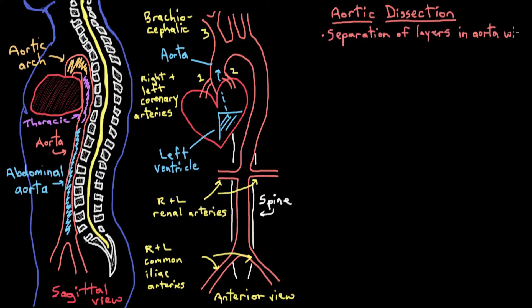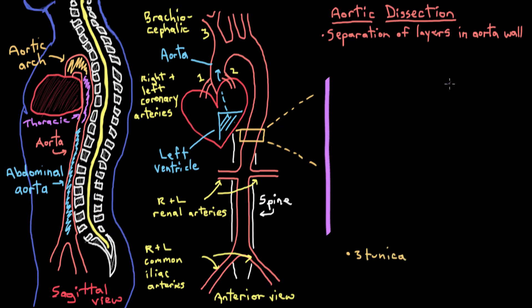To really understand what an aortic dissection is, let's look at the anatomy of its walls to see how this separation might happen. Let's take out this piece of the aortic wall and use that to look at the anatomy of the aorta. The walls of the aorta have three main layers, and we call each of these layers a tunic — so we say that the aorta has three tunics, or in Latin, tunica. The outermost layer is called the tunica adventitia.